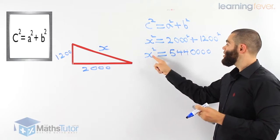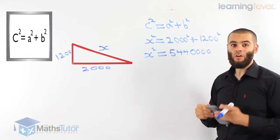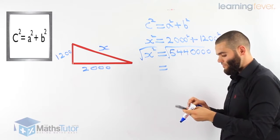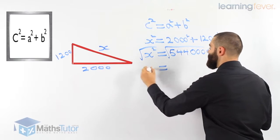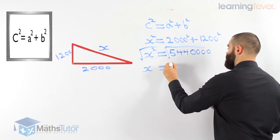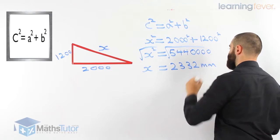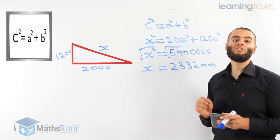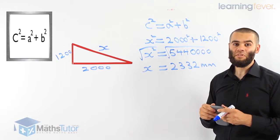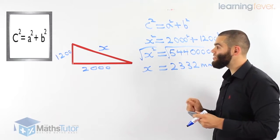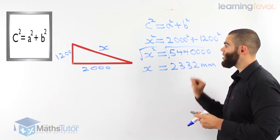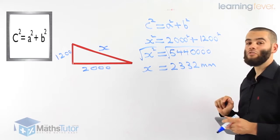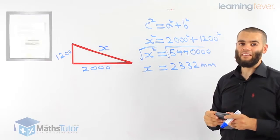Now, X squared equals 5,440,000. We have to square root to get X because we only want X. So we square root our answer to the nearest millimetre. Our answer is 2,332 millimeters. So the length of our brace is 2,332 millimeters. Builders and carpenters use millimeters to get exact, precise, and accurate measurements when constructing or building something. We need to make sure our brace is 2,332 millimeters long to make this gate.